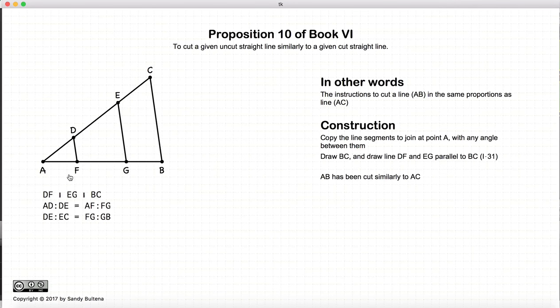And now AB has been cut similarly to AC. In other words, AD to DE is equal to AF to FG, and likewise DE to EC is equal to FG to GB.